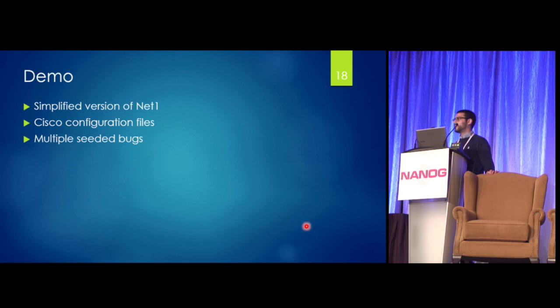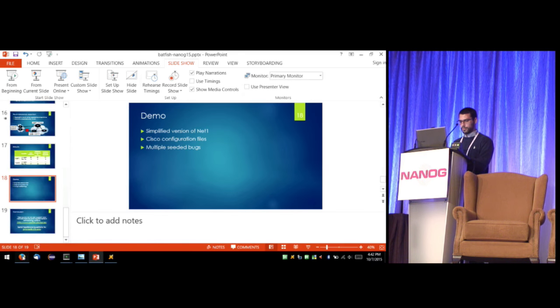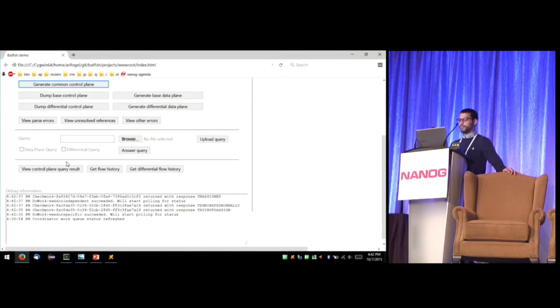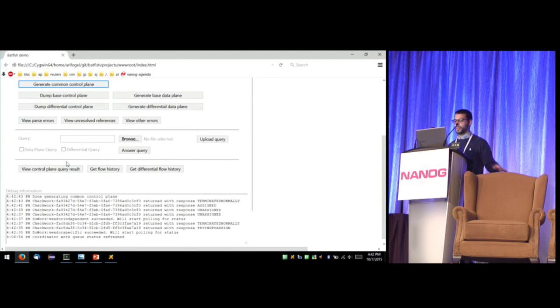So I'm going to do a quick demo for you with a network that I designed that is a sort of analog of NET1. I've written Cisco configuration files for this example network and planted some bugs in there, so let's take a look.